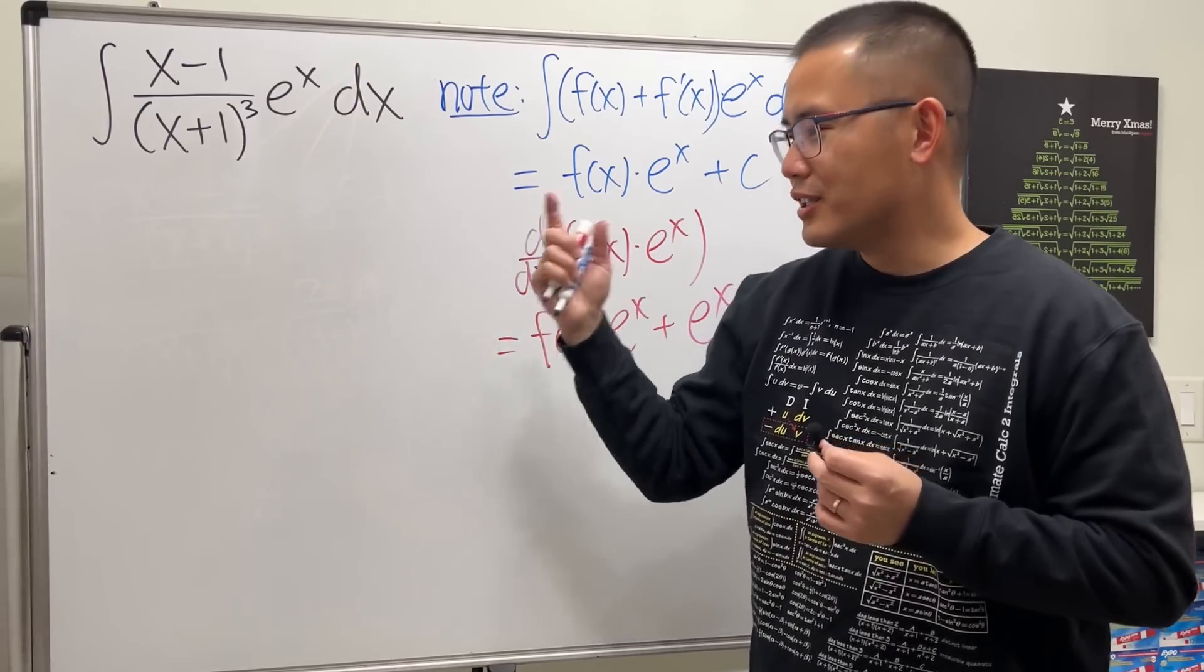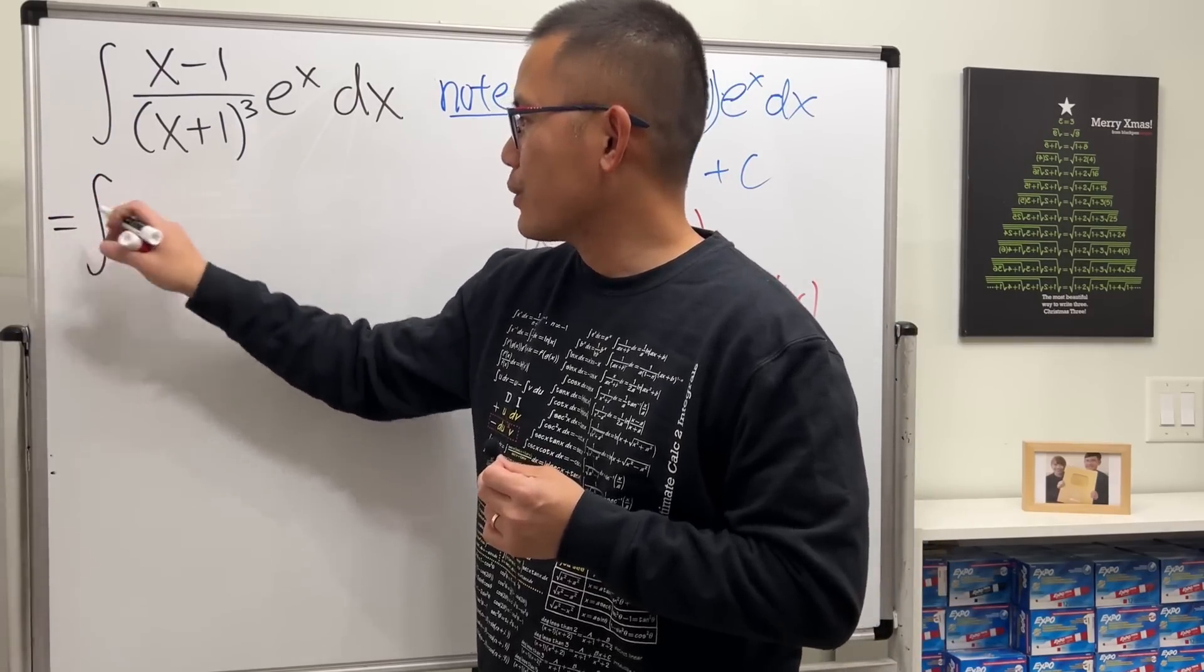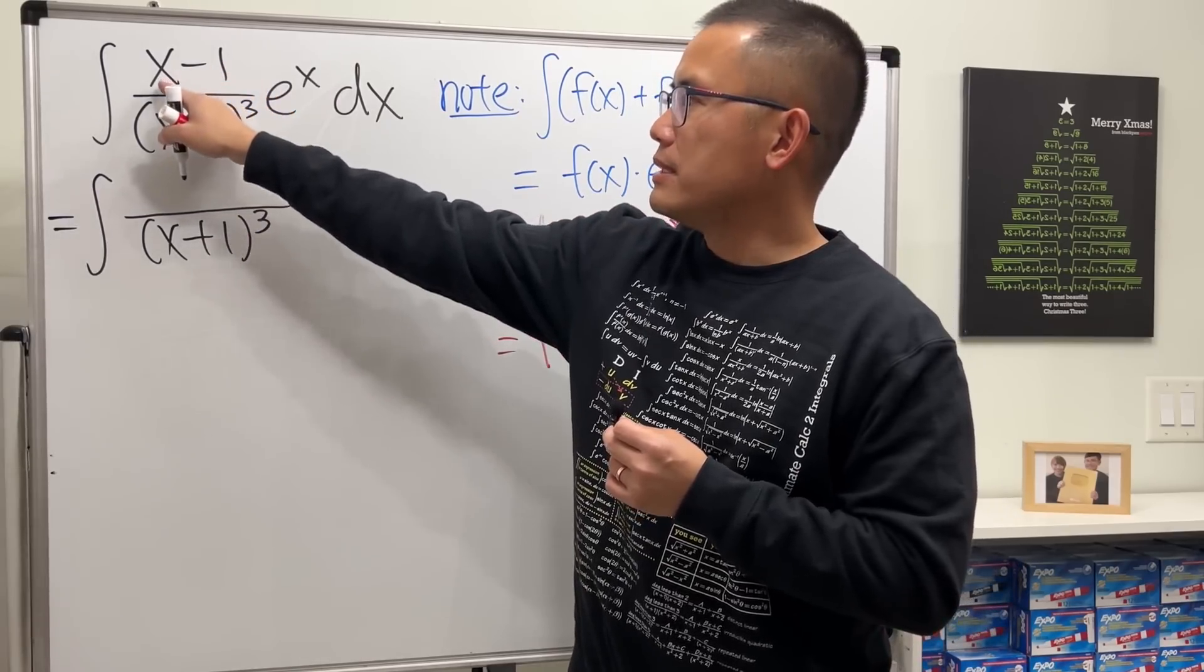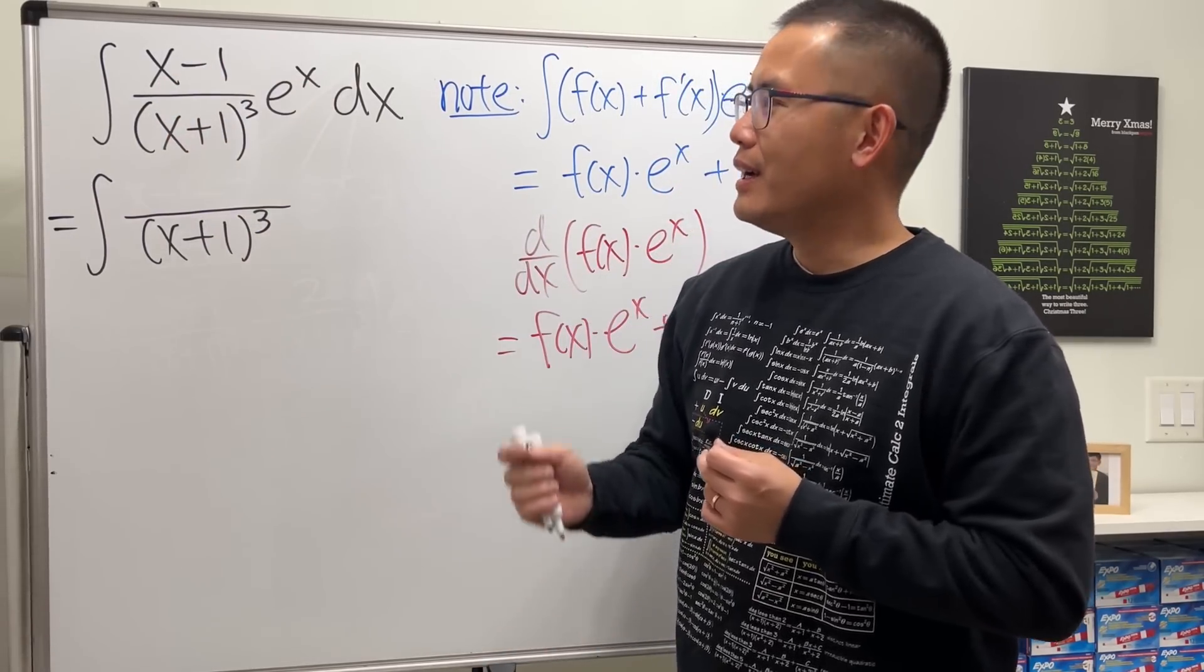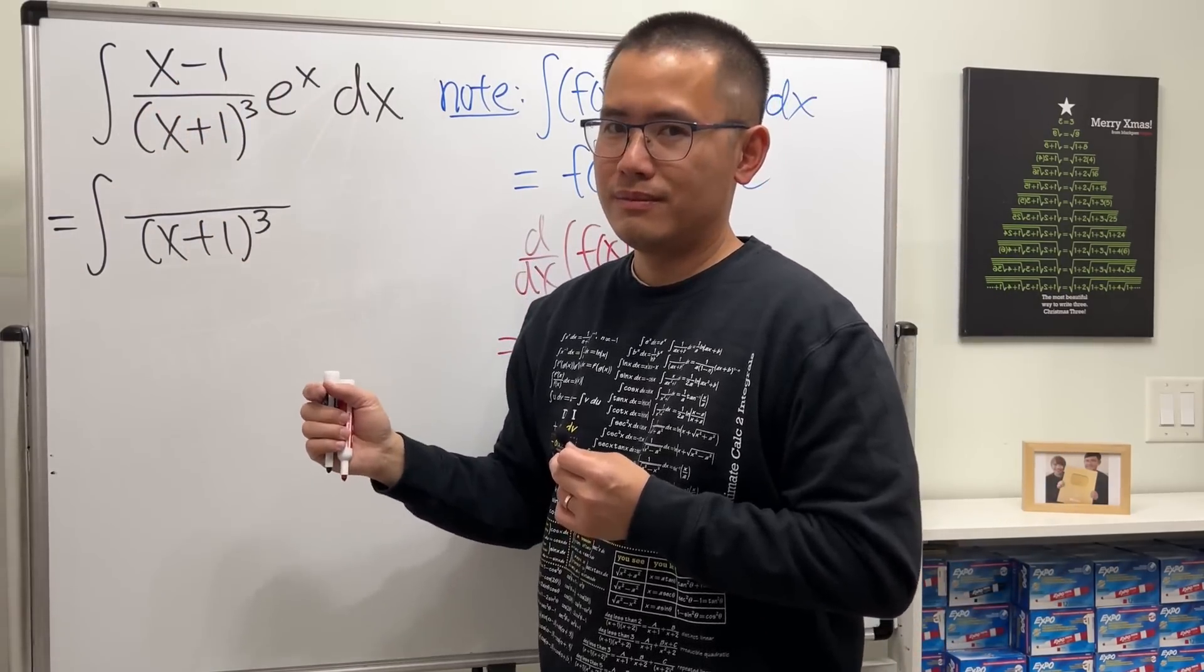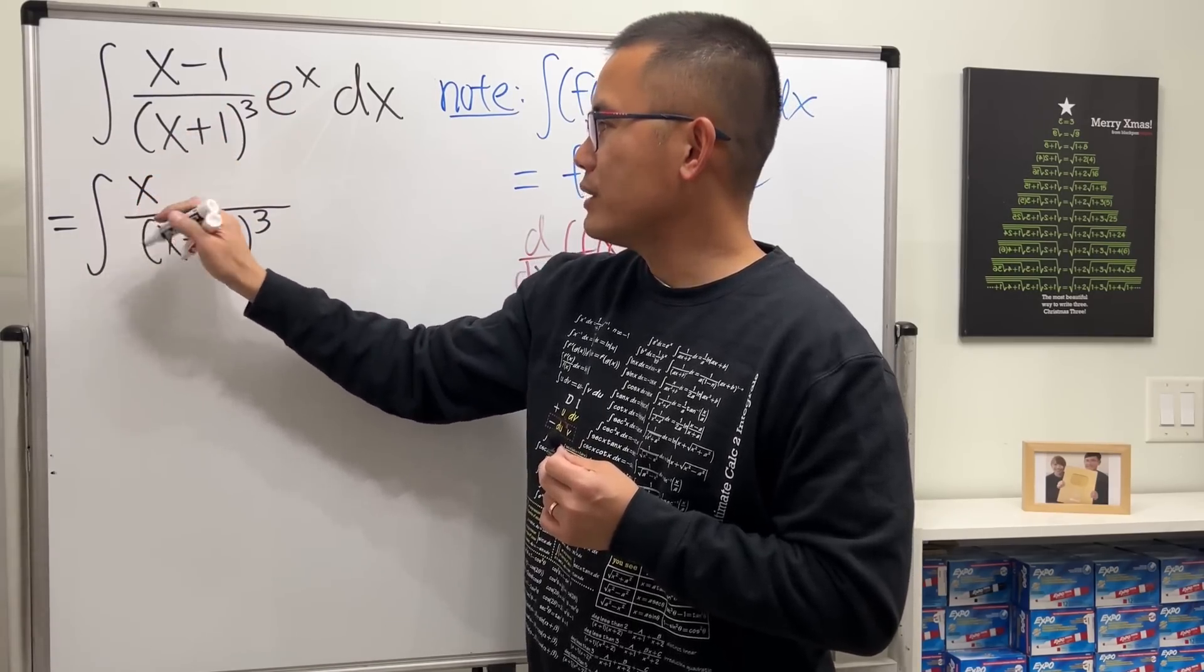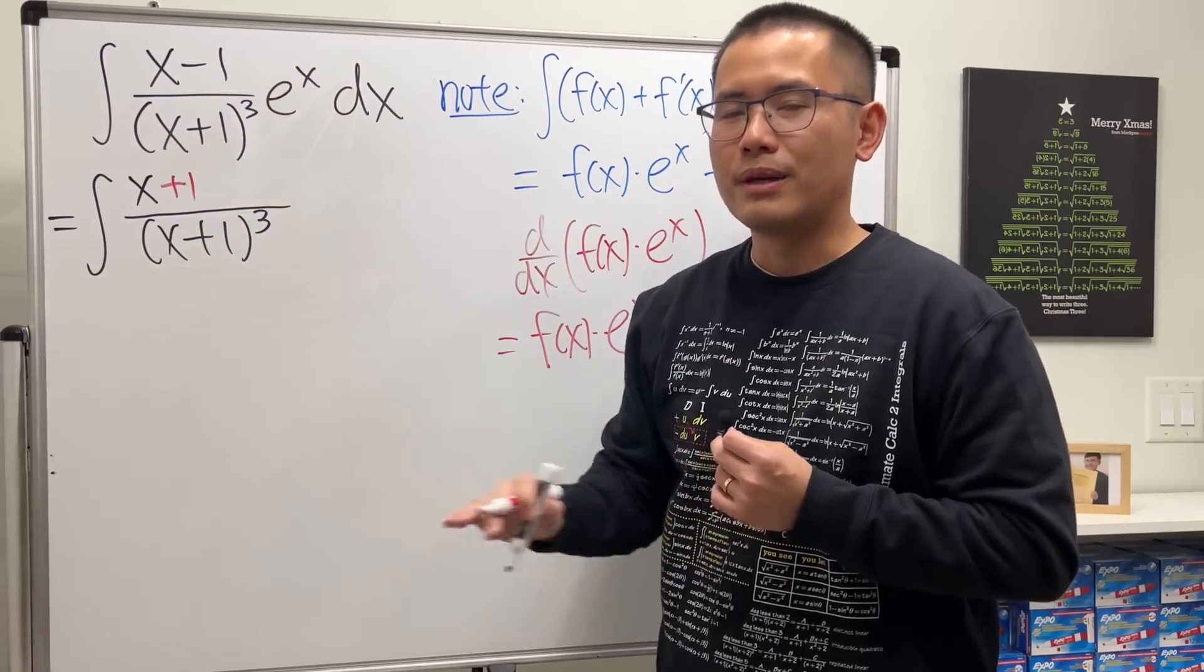So here we go. The bottom here is (x+1)³, the top is x-1. We don't like that. Wouldn't it be so much better if we have x+1? Yes, because that way we can cancel with one of them, right? So let me at least put down x+1 right here. But of course I changed the whole thing, huh? But don't worry. To get back to -1, all we have to do is just minus 2. One minus two is negative one, so it doesn't change the value.